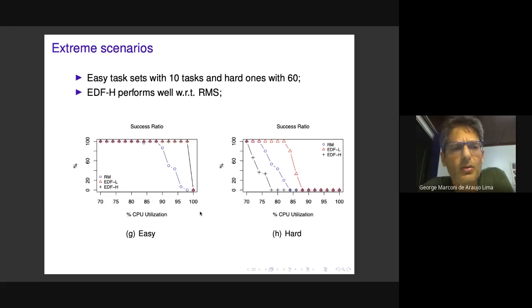In these graphs, the X axis shows the percentage of CPU utilization required by the generated task sets.